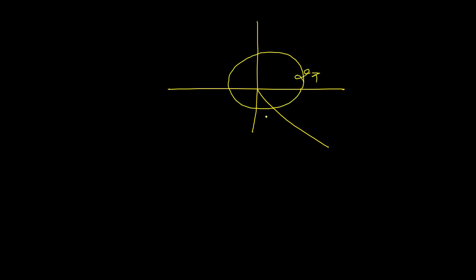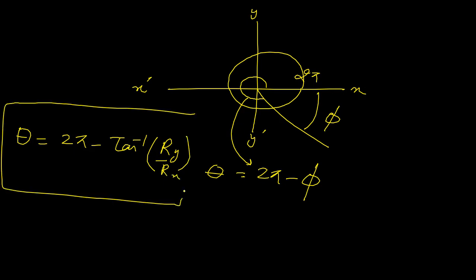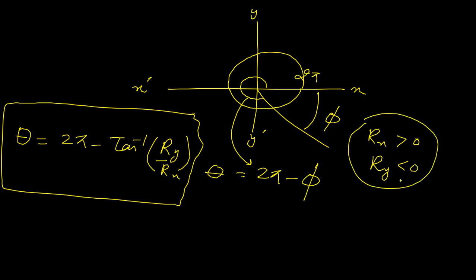Similarly, if your resultant vector lies in the fourth quadrant, the angle relationship gives us two pi minus phi. So theta equals two pi minus phi, which means theta equals two pi minus tan inverse (Ry / Rx). This formula applies whenever Rx is positive and Ry is negative.